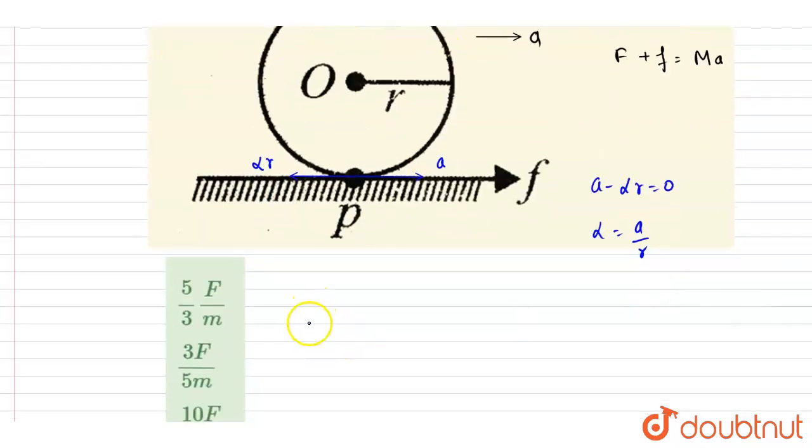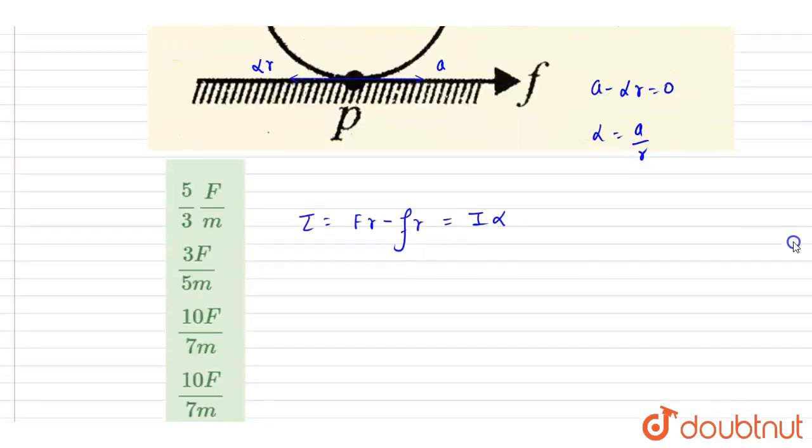Now I will write down the torque because of the two forces. So torque because of F is simply F into r, and because of small f it is f into r again, and it will equal I times alpha. And if you see, this is a solid sphere, so for solid sphere we know that I equals two by five m r square.